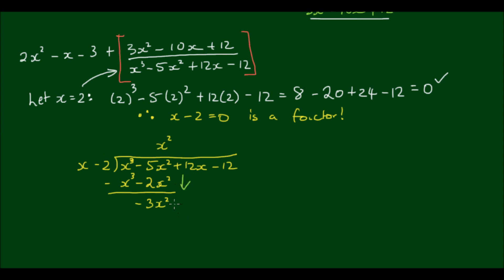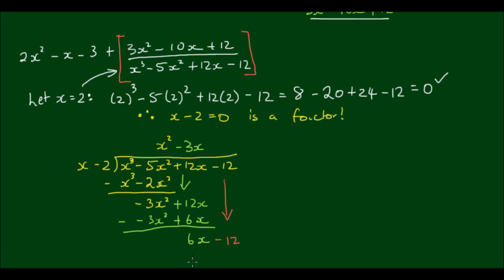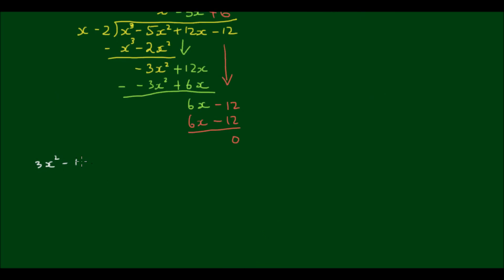I bring down the next term. What do I need to multiply x by to get negative 3x squared? The answer is negative 3x. So negative 3x times x is negative 3x squared; negative 3x times negative 2 is positive 6x. Subtracting, the first term cancels out and the second term gives 6x. I bring down the negative 12. What do I need to multiply x by to get negative 6x? The answer is 6. So 6 times x is 6x and 6 times negative 2 is negative 12, leaving a remainder of 0. So the result is x squared minus 3x plus 6.